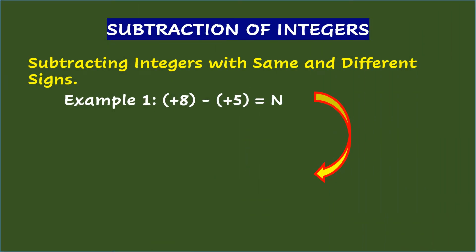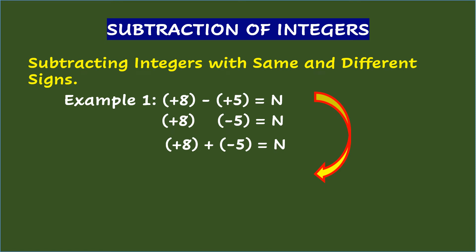Subtraction of integers can be very easy once you know how to add integers. The key step is to transform an integer subtraction problem into an integer addition problem. Example 1: Positive 8 minus positive 5 equals n. First, keep the minuend and get the opposite sign of the subtrahend. So we have positive 8 and negative 5. Then transform the subtraction to addition: positive 8 plus negative 5 equals n. Proceed with regular addition: positive 8 plus negative 5 equals positive 3.